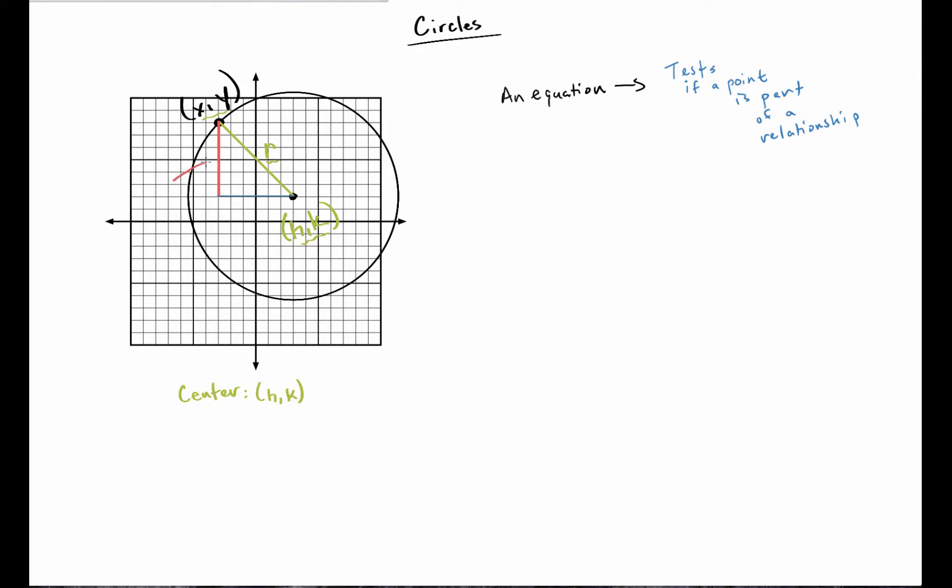So now I just need to find the length of these two legs. Well, that should be pretty easy. I know that this leg right here is just the distance from y to k, so y minus k. And then I know that the horizontal distance from point to point is just going to be x minus h, the distance from x to h.